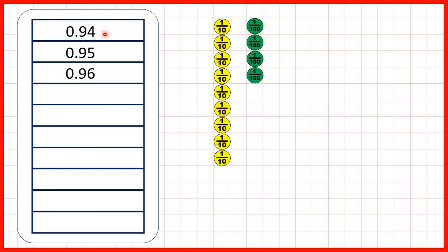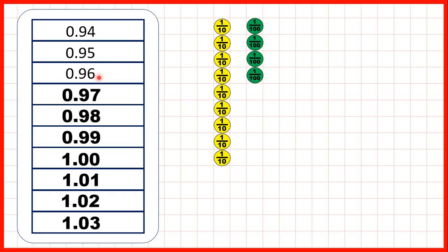Now 0.94, 0.95, 0.96. What are our next seven numbers? Well we're adding hundredths or counting in steps of one hundredth. And you can see that counting in hundredths is very similar to counting in ones.